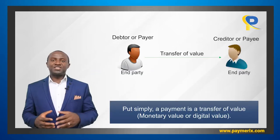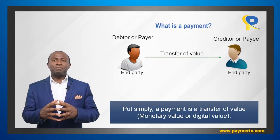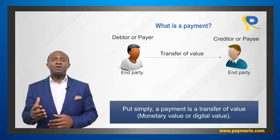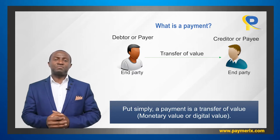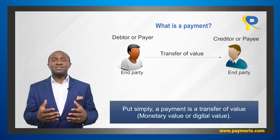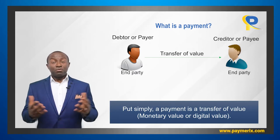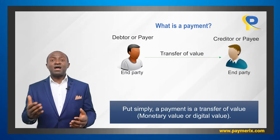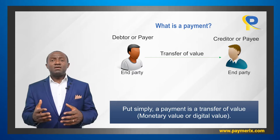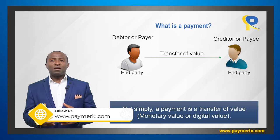Let's begin with a definition of a payment. What is a payment? According to the Bank of International Settlement, a payment is the payer's transfer of a monetary claim on a party acceptable to the payee. Claims typically take the form of cash or deposit balances held at a financial institution or at a central bank. Put simply, a payment is a transfer of value from one party to another — monetary like 10 units of currency, or in digital form like a cryptocurrency.